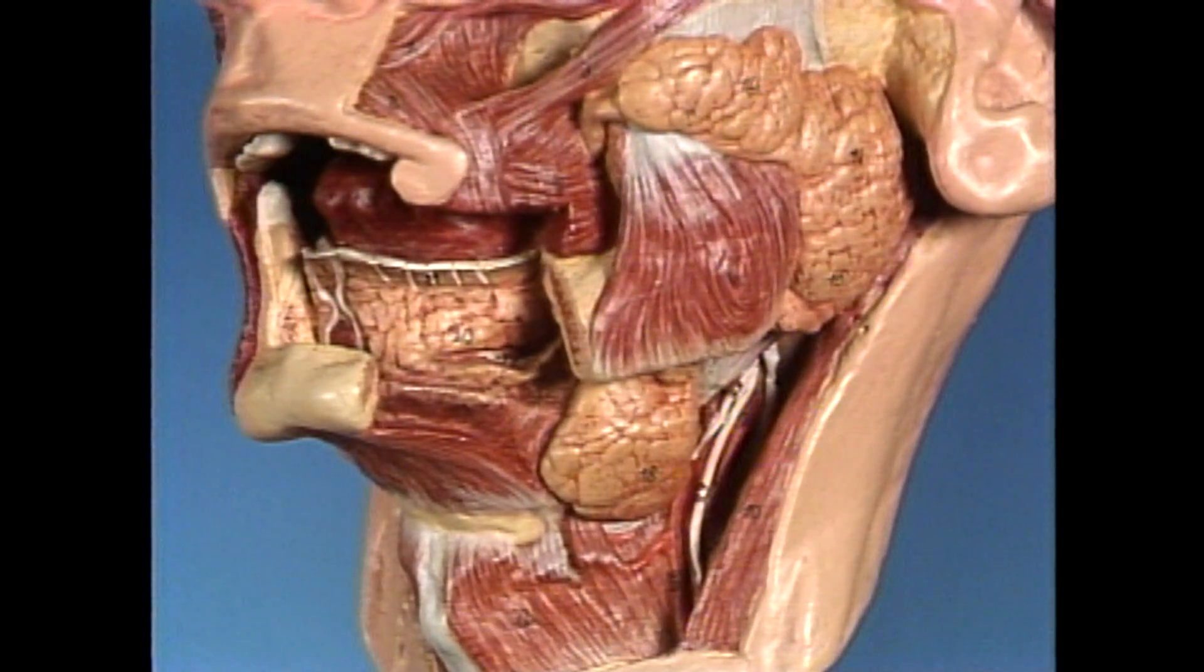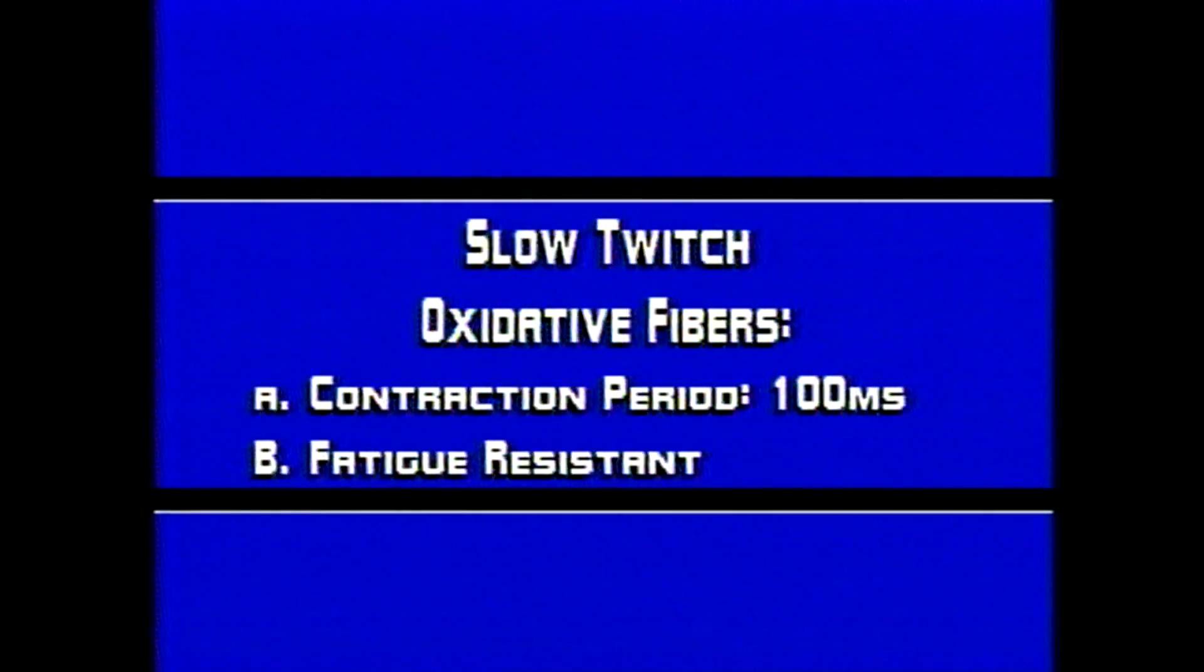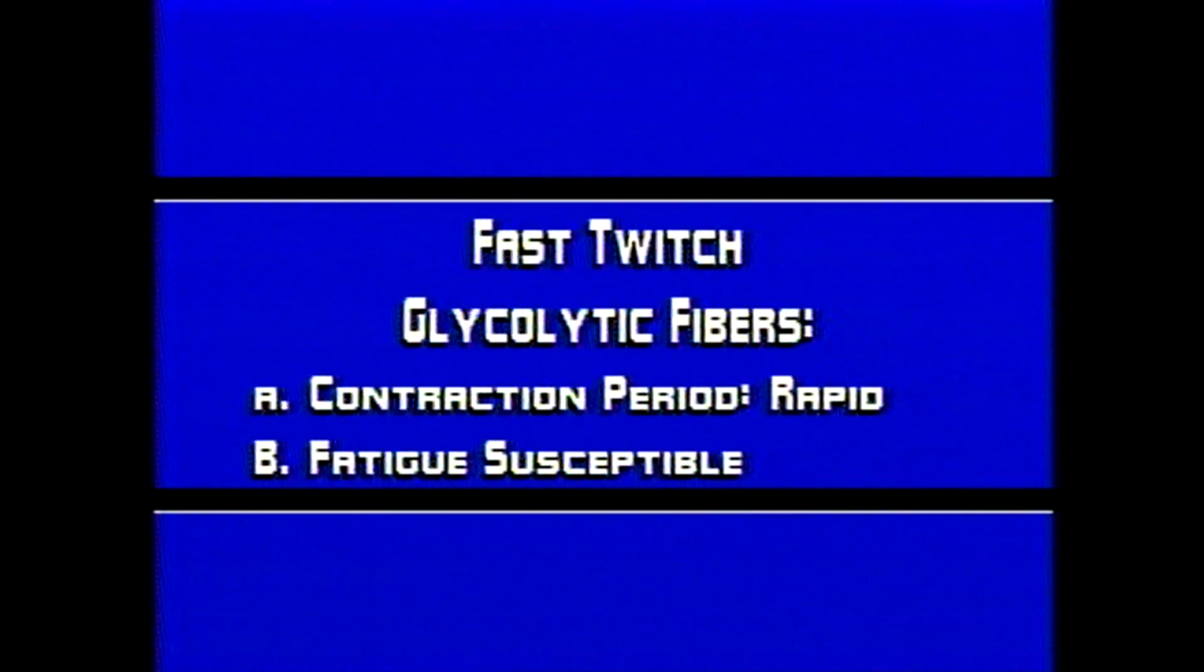Masticatory muscles in humans are composed of three muscle fiber types. The slow twitch oxidative fibers have a contraction period of 100 milliseconds and are fatigue resistant. The fast twitch fibers have a rapid contraction period, but are fatigue susceptible.